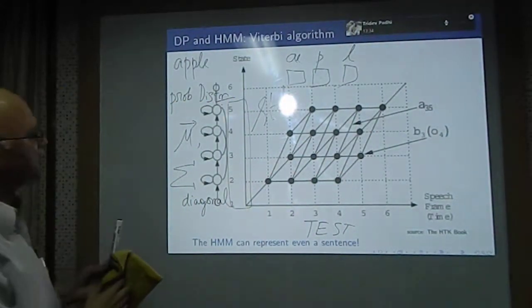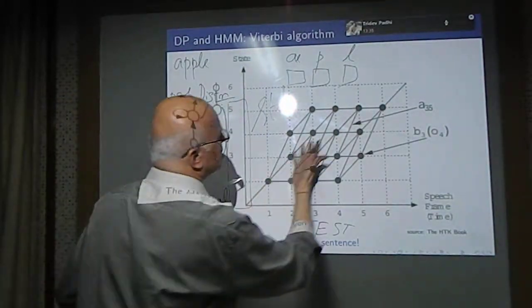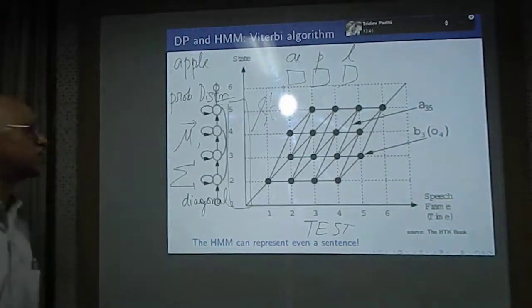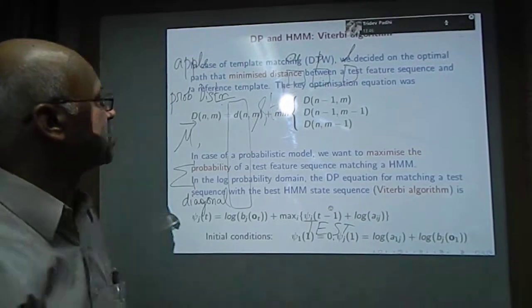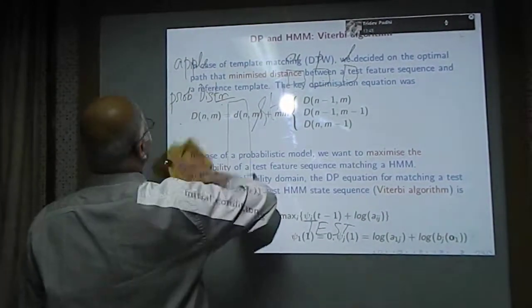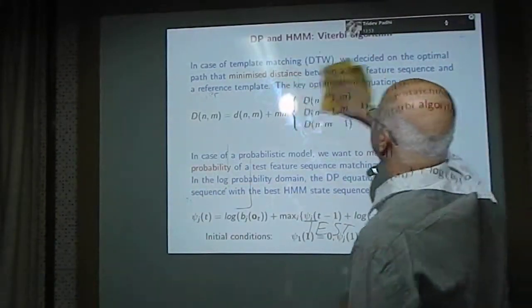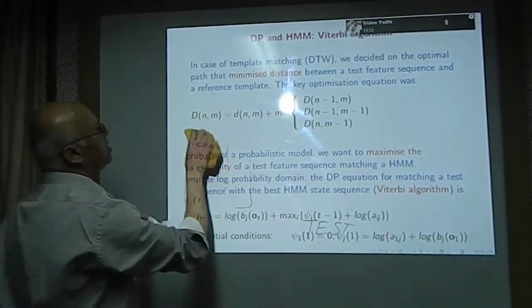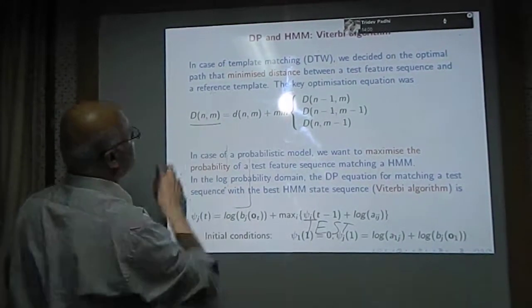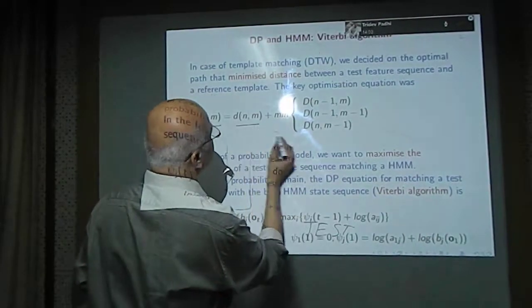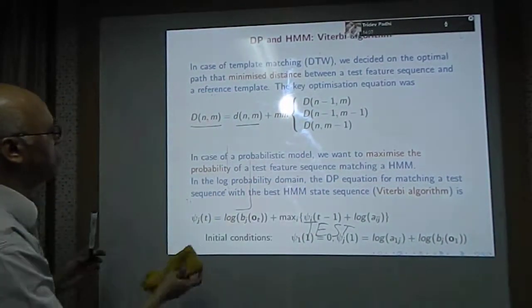Going from DTW to HMM, as far as recognition is concerned, they are similar because both use the dynamic programming technique. In case of dynamic time warping, that is template matching, what we do is we have the distances. Finding the distance of a partial path, that is capital D at any point, is the sum of the local distance and minimum of the cells to the left or below.